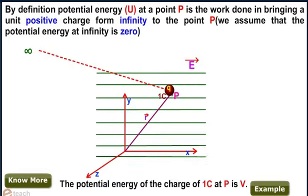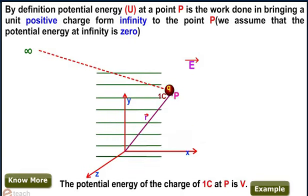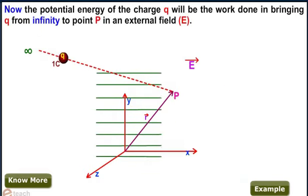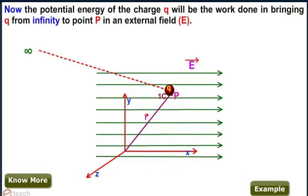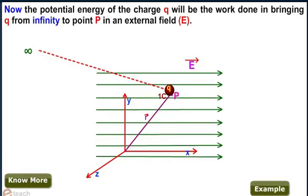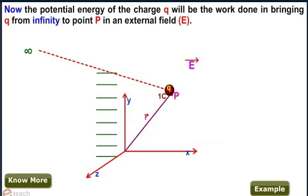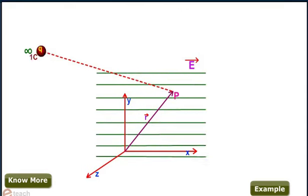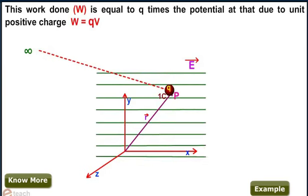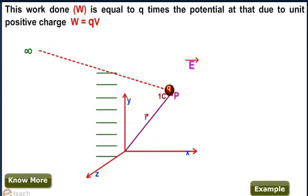The potential energy of the charge of one coulomb at P is V. Now the potential energy of the charge Q will be the work done in bringing Q from infinity to point P in an external field.